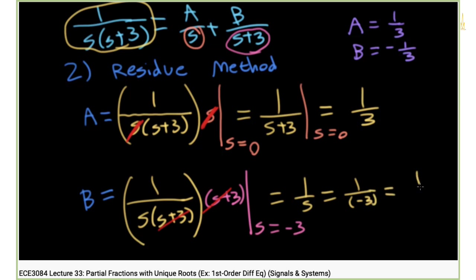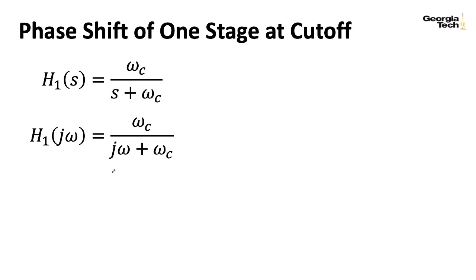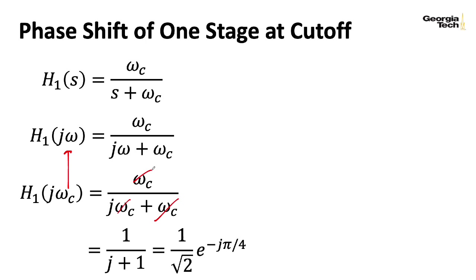Once again, let's justify calling this the half-power cutoff point by plugging in omega c for omega. If we do that, then all of these omega c's wind up canceling, and I'm left with 1 over j plus 1. And I could rewrite that complex number in polar form as 1 over square root of 2 being the magnitude times e to the minus j pi over 4.